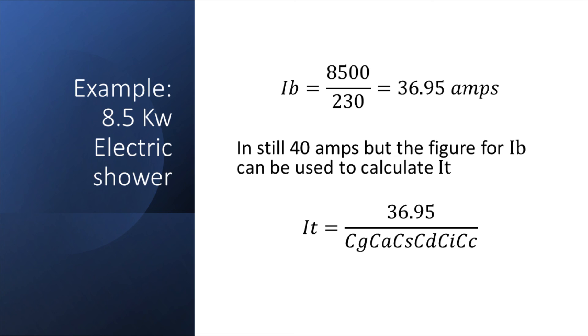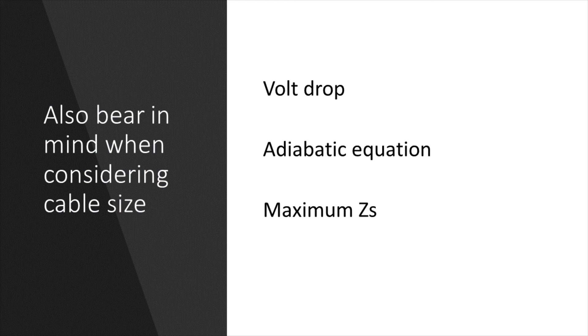Now you may be thinking, what if another electrician comes along later on and replaces the shower or the electric heater for a larger one that exceeds the rating of the cable? This may be a potential downside of this method that may mean in practice you still prefer to size the cable to be greater than the rating of the protective device. Also, when selecting the cable size, we need to consider the voltage drop, the adiabatic equation, and compliance with the maximum ZS. So there are other factors that affect the sizing of the cable as well.